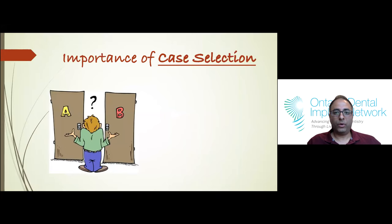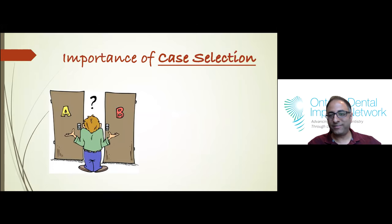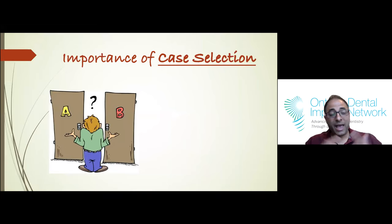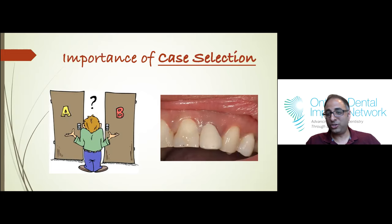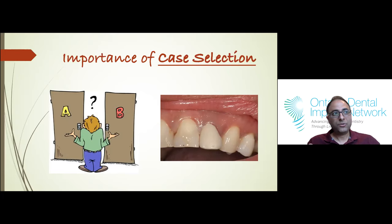The key question is: what case do I start with? You don't want to get all pumped up to do immediate implants and then have a bad experience. It's like picking your first molar endo — you don't want to pick a 90-year-old patient with completely calcified canals trying to find an MB3. If you can do a molar endo, there's no reason why you can't do implants. Implants are way easier than doing endo — I can vouch for that. But you need to pick your cases properly based on your experience level.